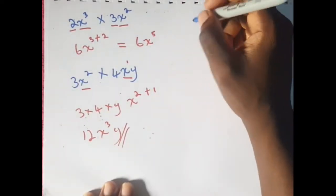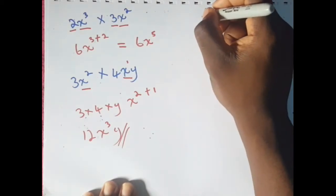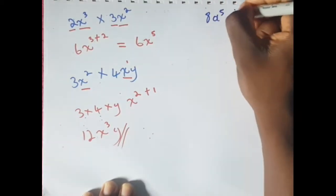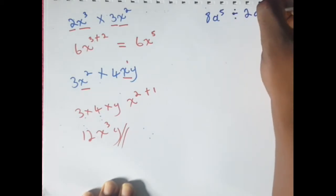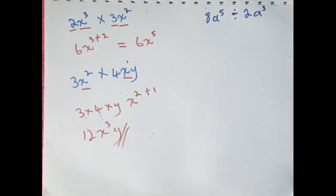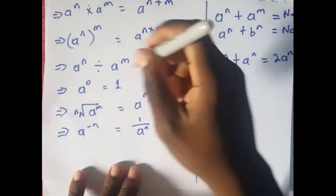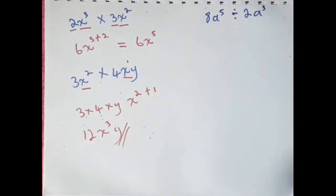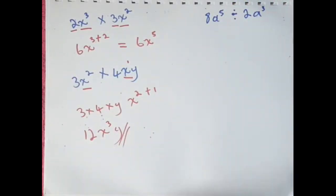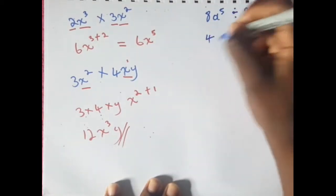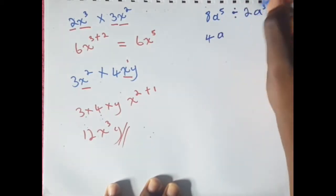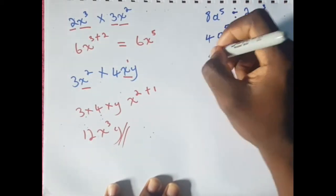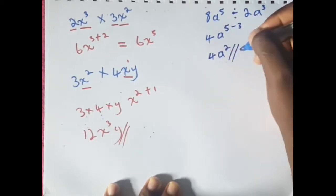Let's do a division question. Say we have 8a raised to the 5th power divided by 2a raised to the 3rd power. From the laws, when we have the same base we subtract the powers. We divide the coefficients as normal: 8 divided by 2 gives us 4. And a raised to the power of 5 minus 3 gives us 4a squared for our final answer.